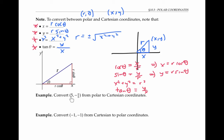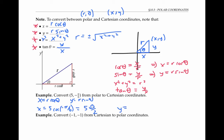To convert five, negative pi over six from polar to Cartesian coordinates, we just use the fact that x equals r cosine theta and y equals r sine theta. So in this case, x is equal to five times cosine of negative pi over six, that's five times square root of three over two, and y is equal to five sine of negative pi over six, so that's equal to negative five halves.